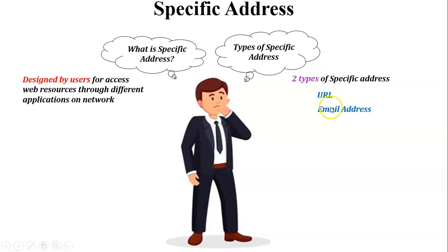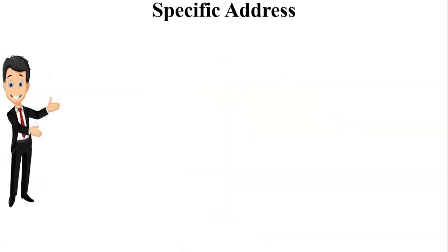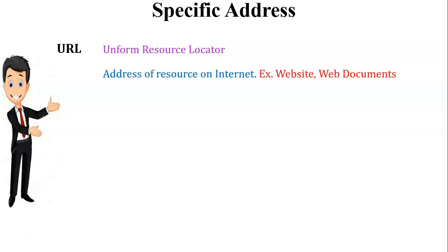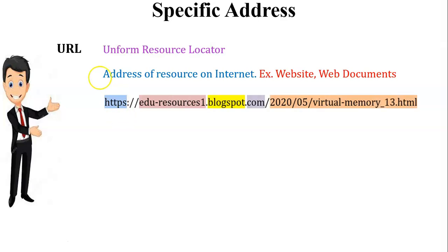The first type is URL — Uniform Resource Locator. A URL is one kind of address of a resource on the internet. Through the URL we can access websites and web documents. A URL always starts with HTTP or HTTPS. HTTPS is a protocol used to access websites and web documents on the internet.